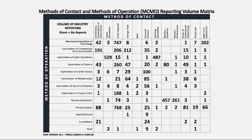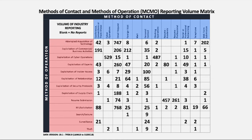On the base methods of contact and methods of operation matrix, across the top horizontal axis are the methods of contact our foreign adversaries use to target cleared industry. These methods of contact are visible to cleared industry, and it is along these avenues of approach that countermeasures should be employed. Along the side vertical axis are the methods of operation, which are less visible to cleared industry and are more applicable to our counterintelligence team in determining what adversaries are trying to accomplish.